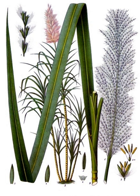It has stout, jointed, fibrous stalks that are rich in the sugar sucrose, which accumulates in the stalk internodes. The plant is 2 to 6 meters tall. All sugarcane species can interbreed and the major commercial cultivars are complex hybrids.